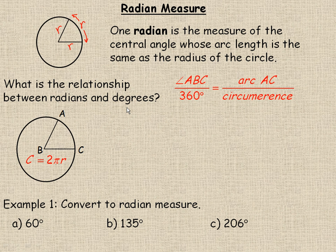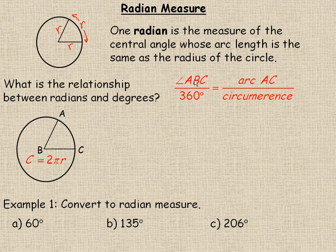In the middle of the page we're going to talk about the relationship between radians and degrees, because it's nice to be able to convert from radians to degrees or vice versa. There's a proportion over here that relates to this circle. Angle ABC is meant to be a one radian angle, so this is a radius, this is a radius, and arc AC would also be a radius length. This proportion says that the ratio of the size of this one radian angle to the entire circle should be in the same proportion as the ratio of the arc length AC to the entire circle.